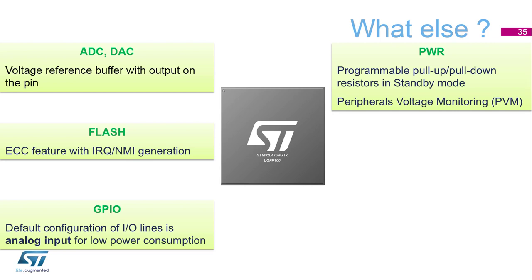Four programmable voltage detectors with fixed thresholds are implemented and connected to the external interrupt unit. These are connected to the analog supply, digital supply, the supply for the I/O ring number 2, and for the USB supply input, allowing safe voltage domain turn-on and turn-off when the STM32L4 is supplied from independent voltage sources. These programmable voltage detectors are by default turned off, except the one connected to the digital supply line.